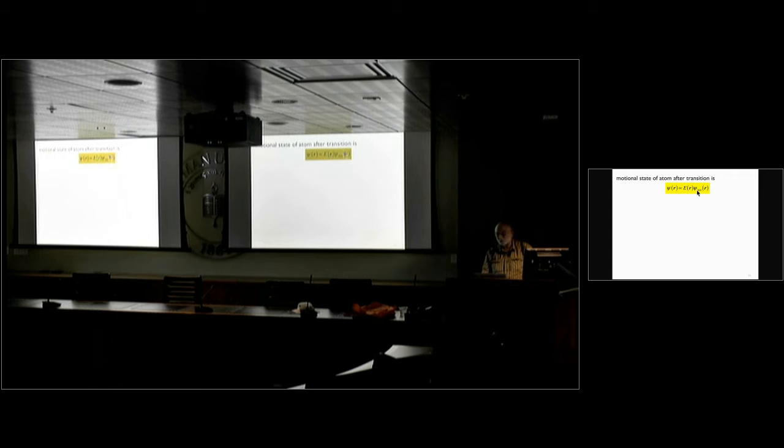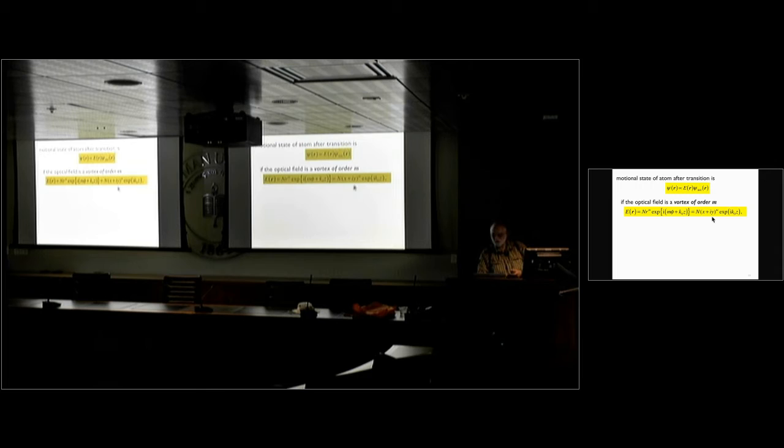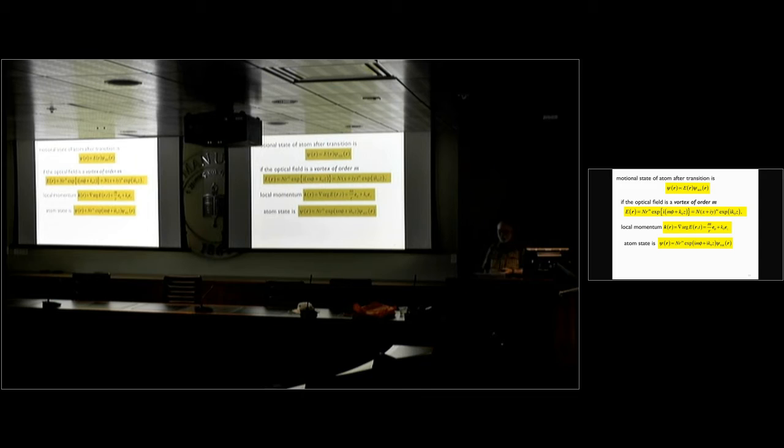From which you can work out the probability distribution for the atom that's made a transition. The motional state is some state psi. It turns out to be very simple. It's proportional to the initial state, just multiplied by the strength of the field where it is. Now let that be a vortex of order m. So here's the field, x plus iy to the m, e to the ikz. The z doesn't really matter. It will give a push in the z direction, which you could cancel by having a wave going the other way. Now the local momentum, as I've said, it's k0 upwards. That's the plane wave bit. But then it's this local vortex structure, which is azimuthal. Right. And the atom state is, well here it is. I've just put in this formula for the optical field. There it is. And the momentum representation is the Fourier transform of that. You can work that out exactly, actually. It's the derivative with respect to kx. I times the derivative to ky to the m times the Fourier transform of the initial state with kz minus k0. Of course you've absorbed the photon going upwards.